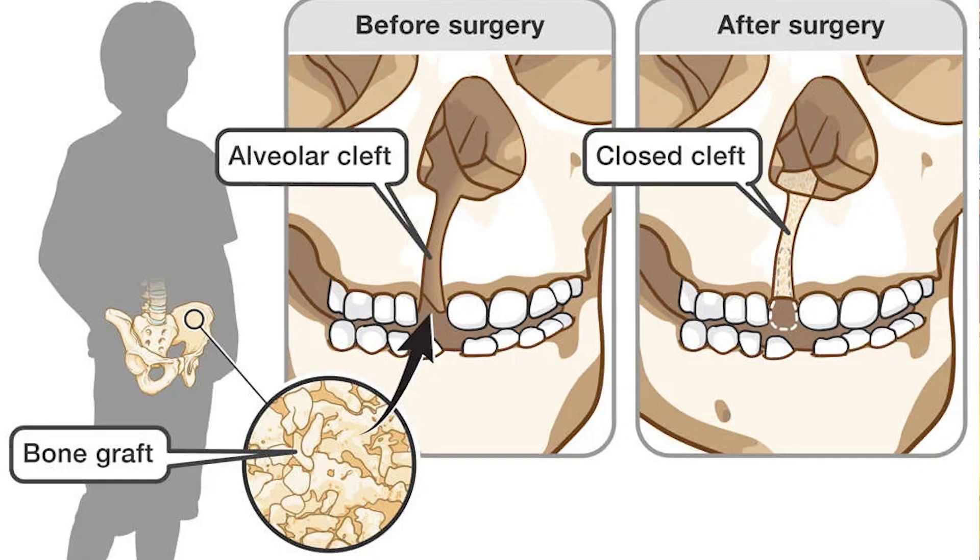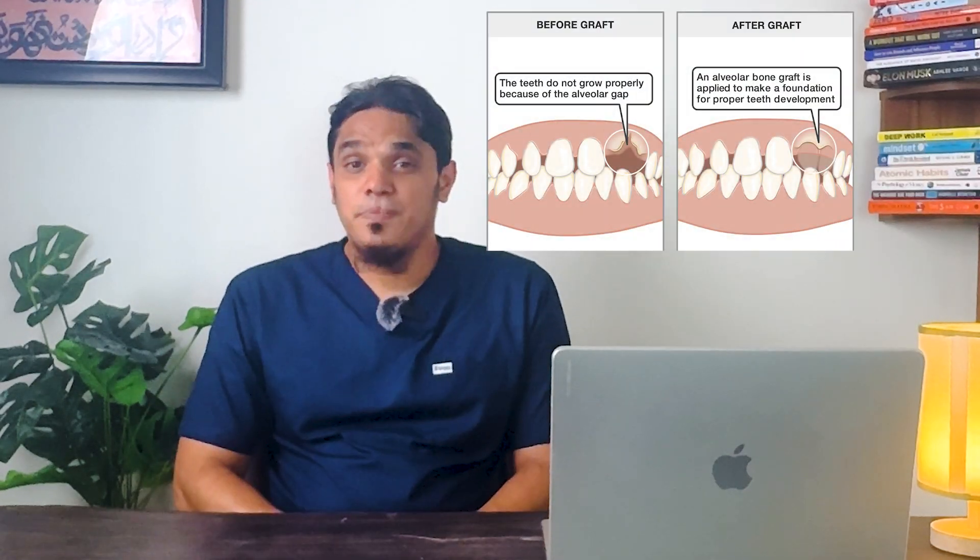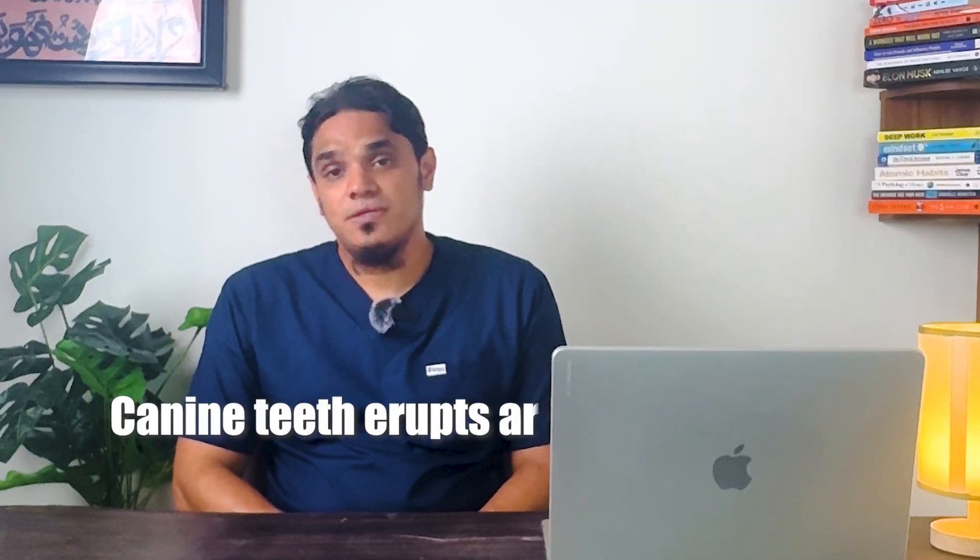It does two vital things. One, it provides the foundation for the canine teeth to erupt. The canine teeth erupt at around 11 to 12 years of age and require solid bone to descend into. Without the bone graft, they don't have anywhere to go.